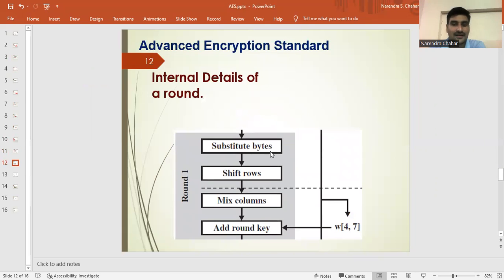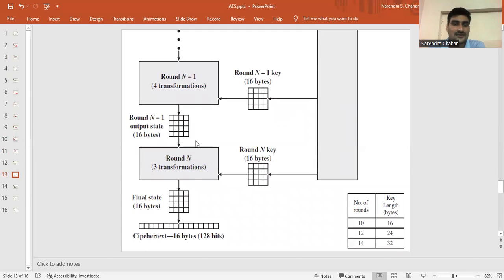We talk about a round. First one is substitute bytes, then shift rows, mix column and round key. We have discussed all these earlier. Total rounds are N here. Round N key will be here. The final state, again a matrix, output matrix is here. This is arranged in the cipher text.